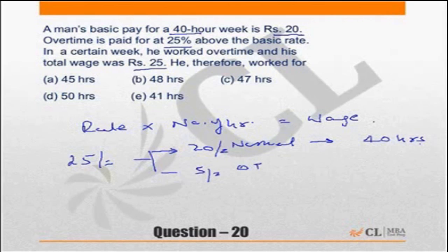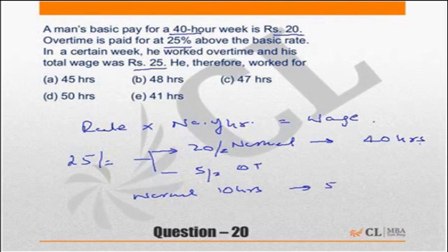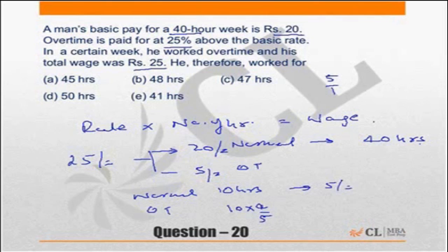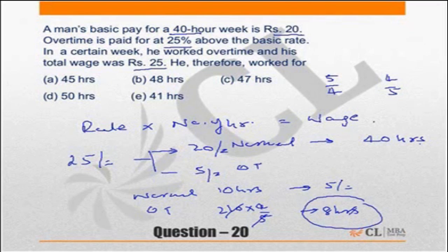In normal time, 10 hours would have given him ₹5. But with overtime, the time is 4/5 of that — because the rate has become 5/4 times, the time becomes 4/5. So 10 × 4/5 = 8 hours. In overtime, he gets ₹5 for 8 hours. So the total hours worked is 40 + 8 = 48 hours.